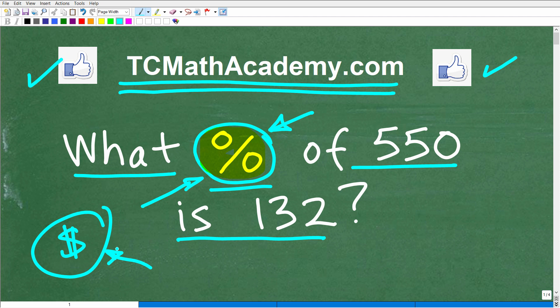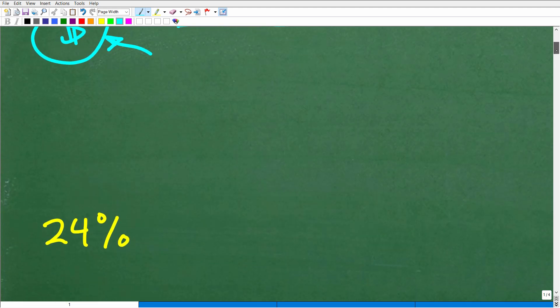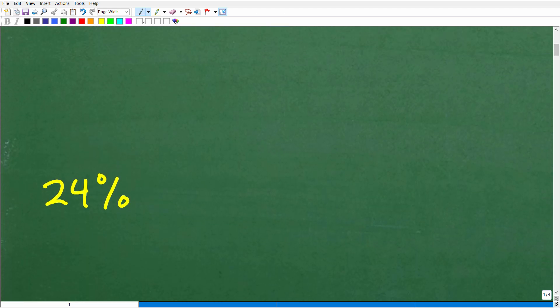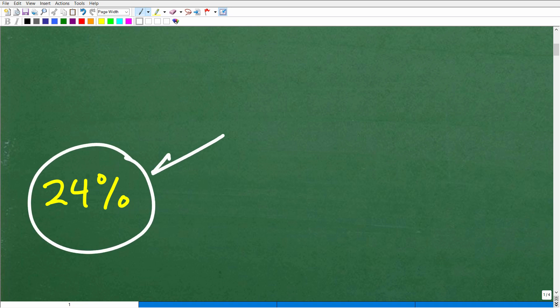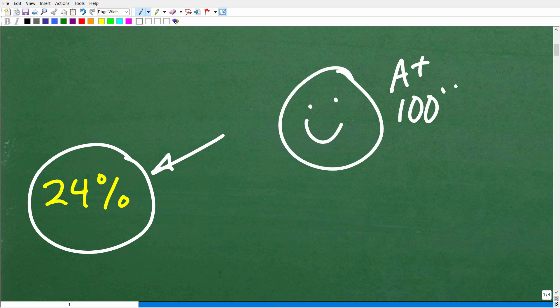So let's go ahead and answer this question right now. What percent of 550 is 132? Well, the correct answer is 24 percent. All right. So hopefully this was pretty easy for most of you out there. And if you got this right, let's celebrate by giving you a nice little happy face and a plus, a 100 percent and multiple stars. So you could tell your friends and family that, yes, indeed, you understand percent.